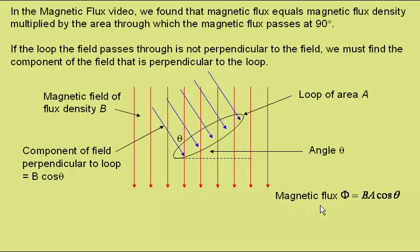So, we find that the magnetic flux φ is given by B A cos theta.